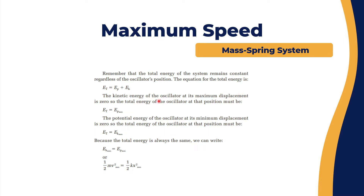The total energy equals the potential energy plus the kinetic energy. The kinetic energy of the oscillator at the maximum displacement is zero, so the total energy in that case would be E_total equals EP_max, and EK equals zero.